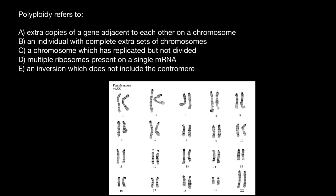Now imagine that here we have one extra chromosome — an X chromosome. We call this condition trisomy, so this is going to be trisomy of the X chromosome. And for example, if you have another extra chromosome, this is going to be trisomy 19, or trisomy of chromosome 18.